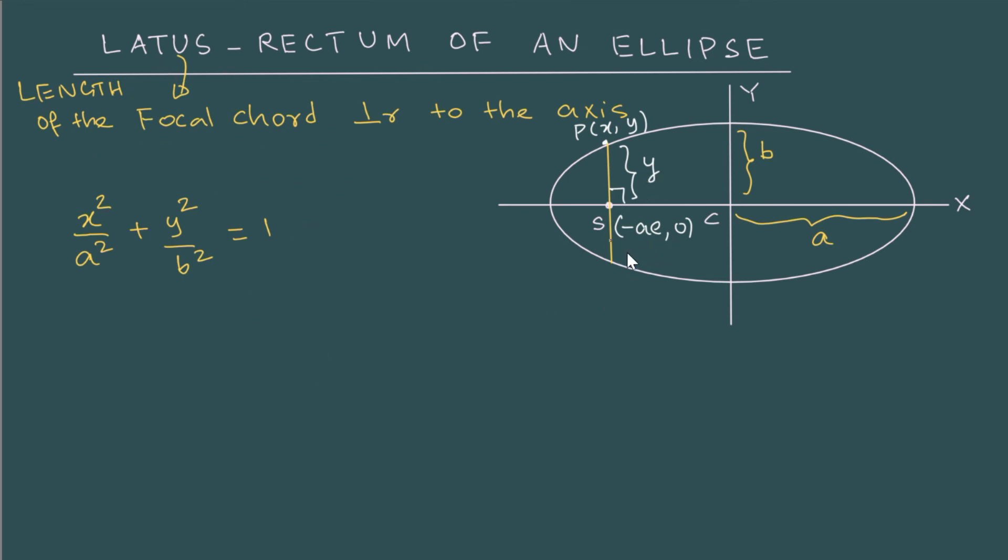So let us substitute ae in the equation of the ellipse. So I have minus ae whole square by a square plus y square by b square equal to 1. So here you see that I simply have a square by a square that disappears, and then you have e square. So I have y square by b square is 1 minus e square.